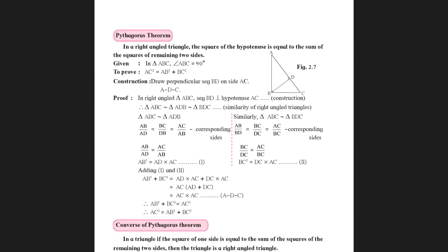In a right angle triangle, the square of the hypotenuse is equal to the sum of the squares of the remaining two sides. Given triangle ABC with angle ABC equal to 90 degrees, we need to prove AC squared equals AB squared plus BC squared. Construction: draw segment BD perpendicular to side AC. In the proof, we use the similarity of right angle triangles — triangle ABC is similar to triangle ADB, which is similar to triangle BDC. You can simply state they are similar and cite the similarity of right angle triangles as the reason.